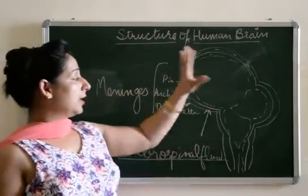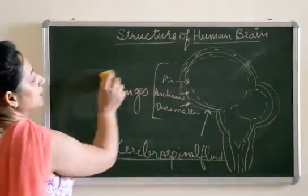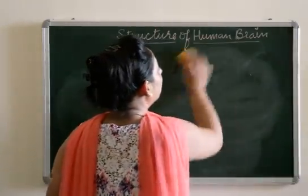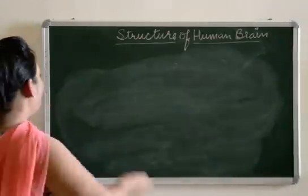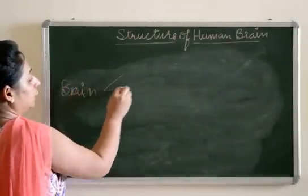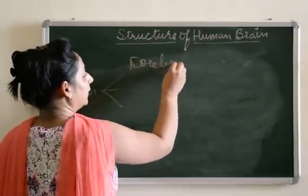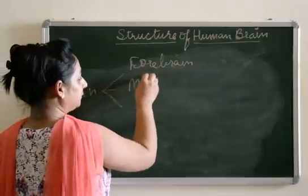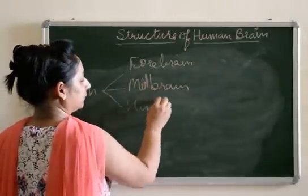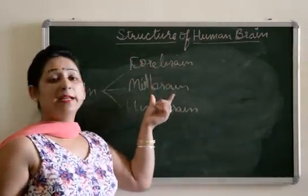This was all regarding the overview of the structure of the brain. Now we are going to discuss the structure of the brain in detail. The main classifications of the brain include three: forebrain, midbrain, and hindbrain.